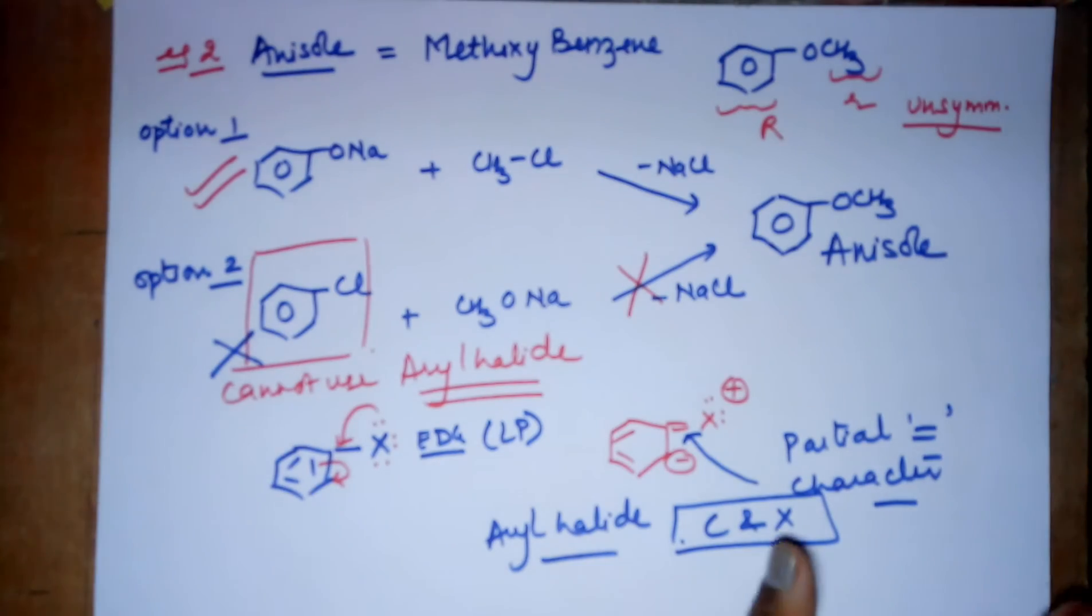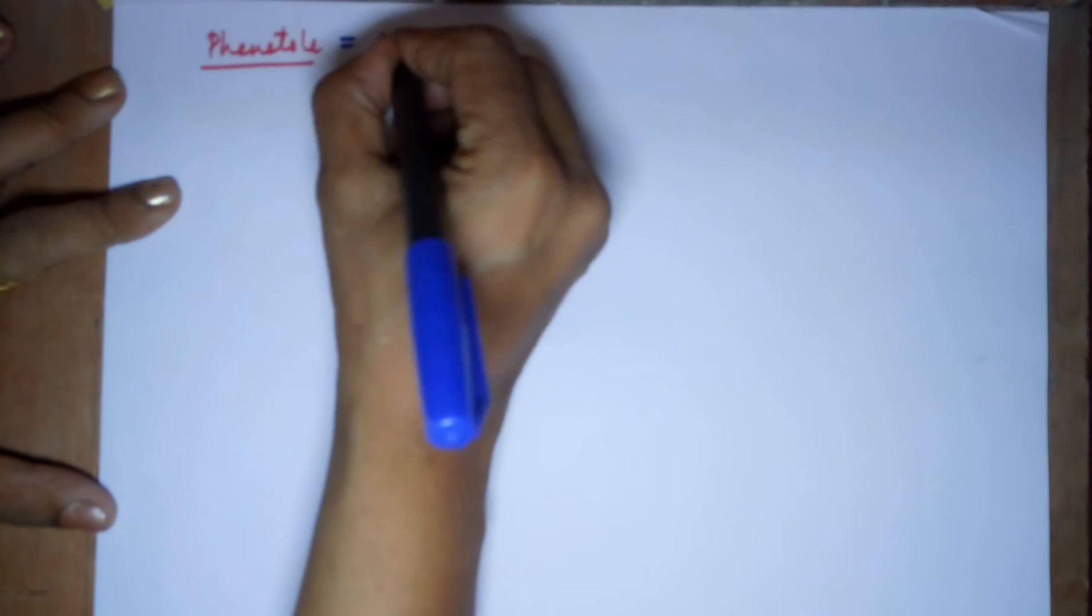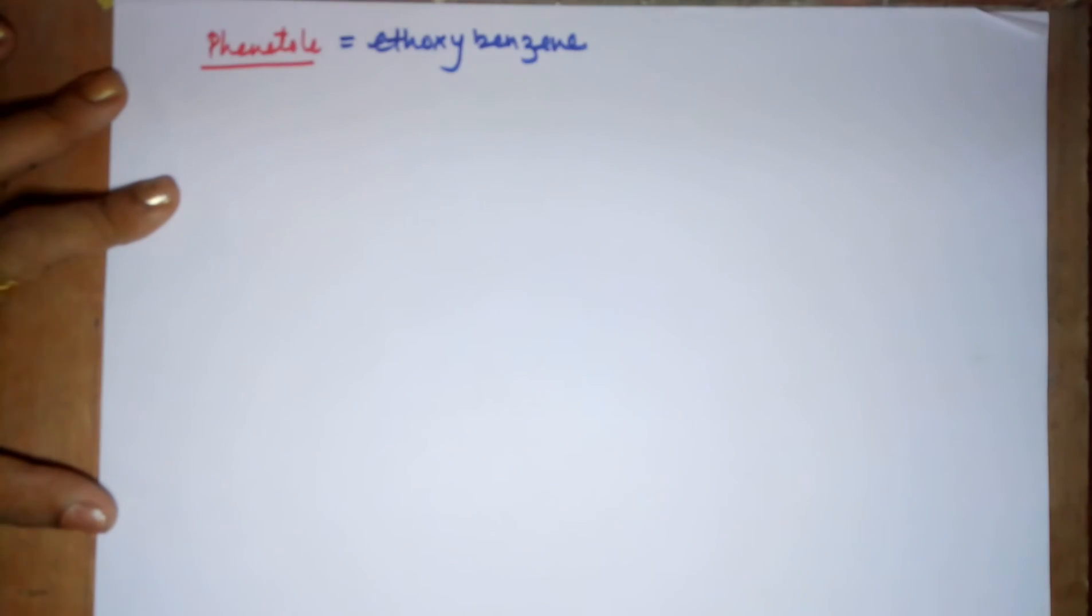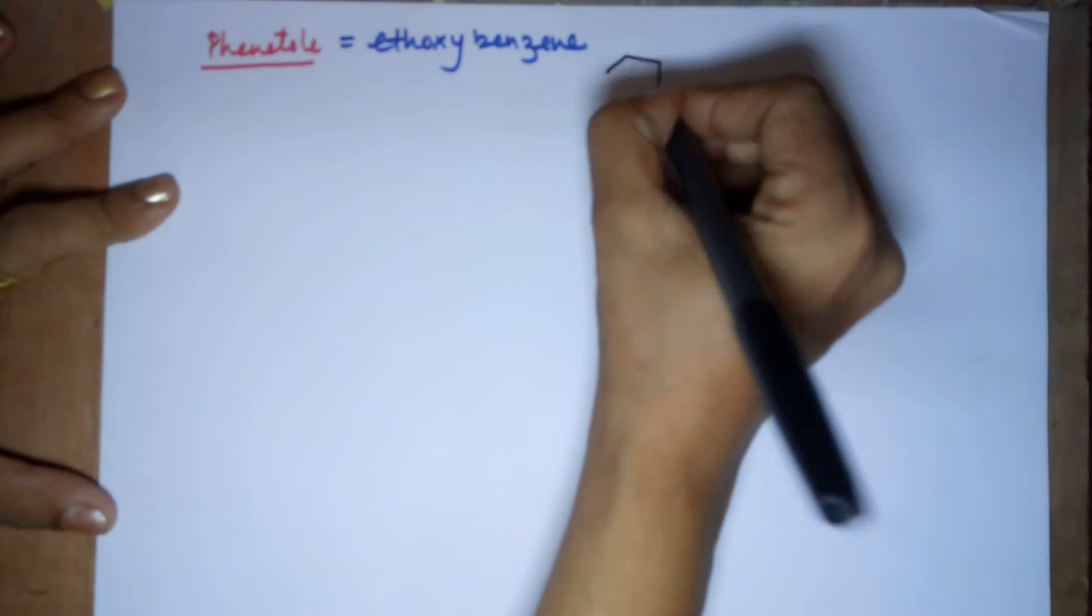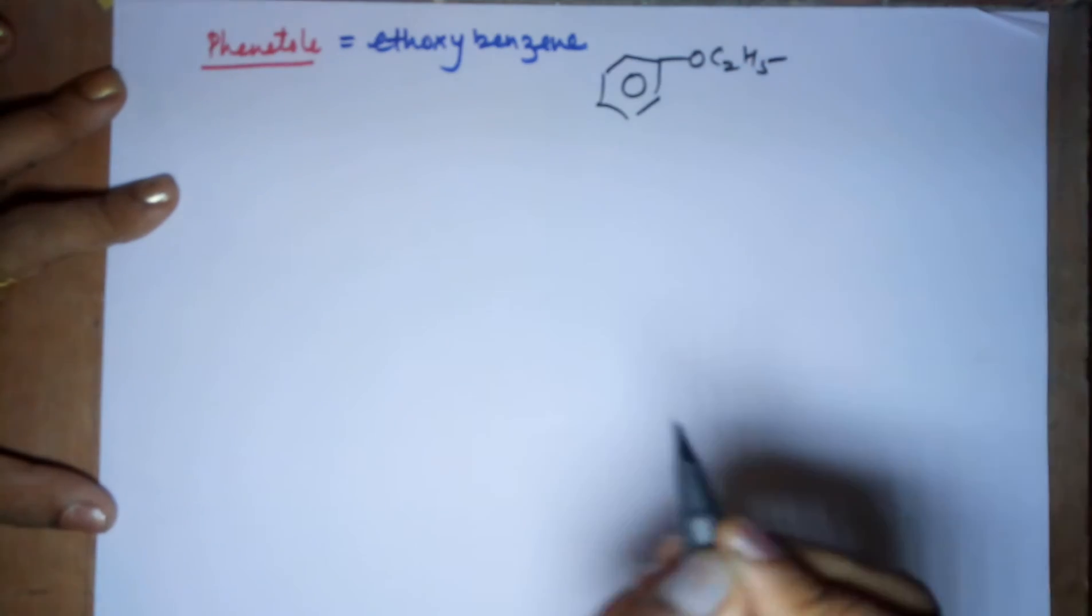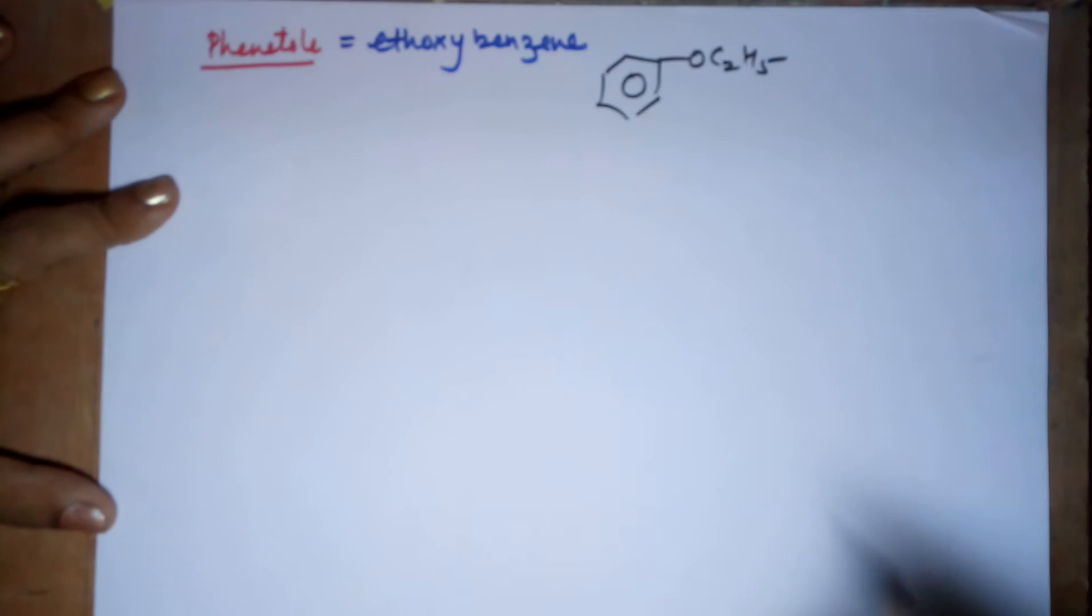Moving to the second example on the parallel lines. The second example that I am taking is that of phenetole. Now, what is phenetole? Phenetole is ethoxybenzene. Let us draw the structure. This is your benzene. This is your C2H5. This is ethoxybenzene. Let us prepare it from Williamson's synthesis.